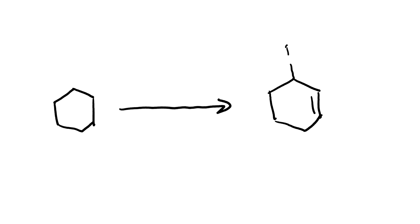And you could draw out your whole synthesis like this: one, Cl2 h-nu; two, NaOMe; and three, NBS h-nu.